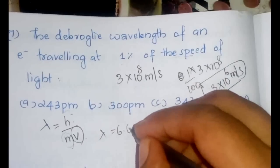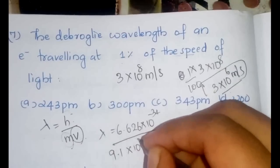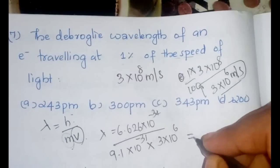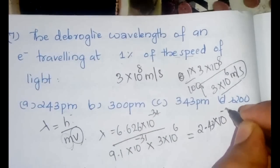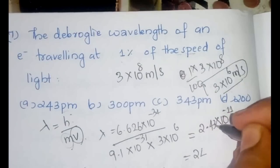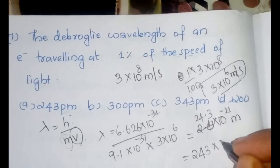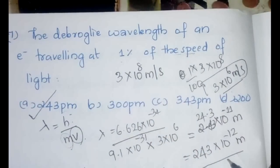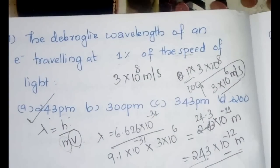Lambda is equal to 6.626 into 10 to the minus 34 which is the Planck's constant in SI unit. Then mass is equal to 9.1 into 10 to the minus 31 kilogram and the velocity is equal to 3 into 10 to the 6. This will be approximately equal to 2.43 into 10 to the minus 11 meter which will be 243 picometer. So the answer will be 243 picometer.